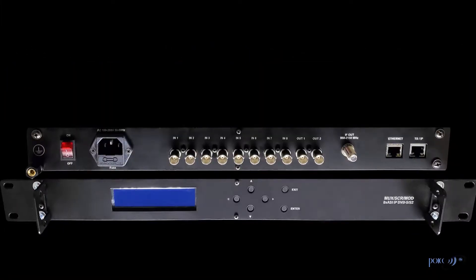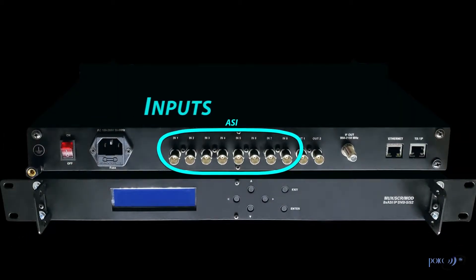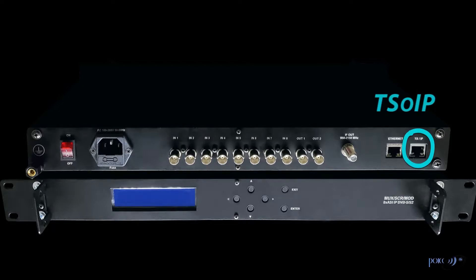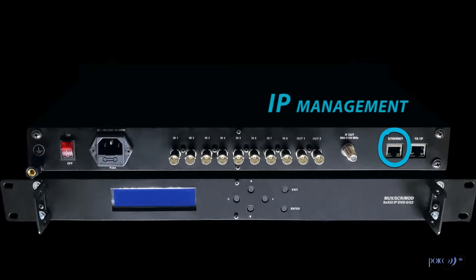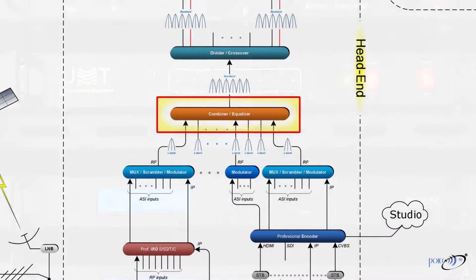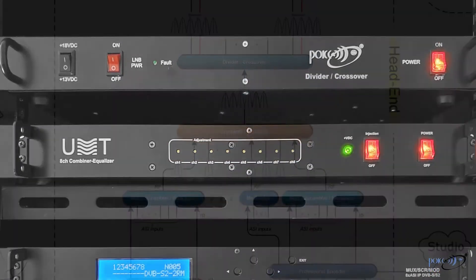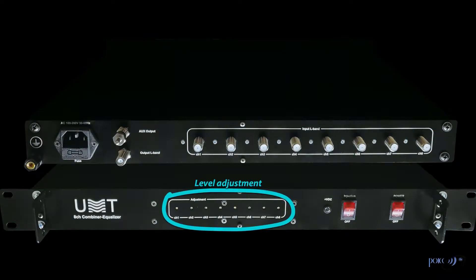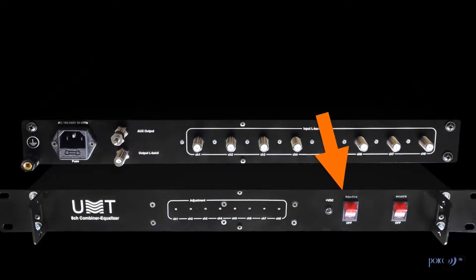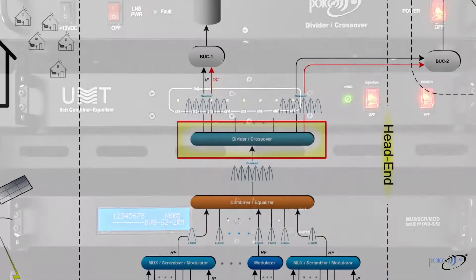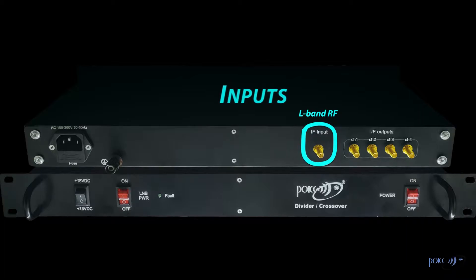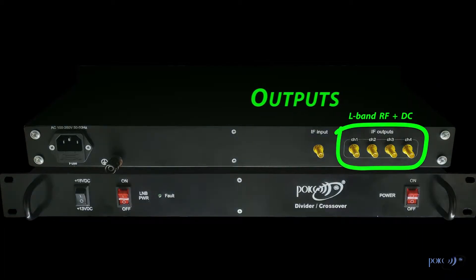Number 4: Scramblers. The presented 4-in-1 scrambler has an integrated remote multiplexer inside. Therefore, it has a number of ASI inputs and 2 ASI outputs. In addition, a built-in modulator allows transmitting the created bouquet through the RF output. This scrambler can also receive several DVB IP inputs and transmit several DVB IP output streams. This hardware server is controlled by IP. Number 5: Combiner Equalizers. These devices have several RF inputs and one RF output with AUX output, with level adjustment for each channel and options such as DC injection for BUC power supply.